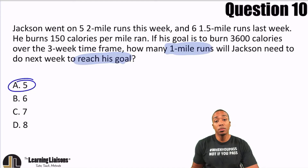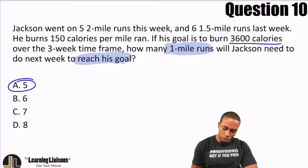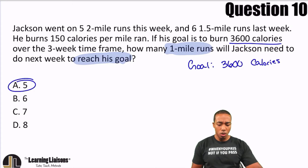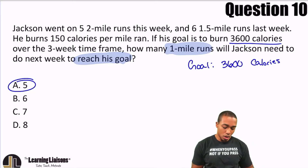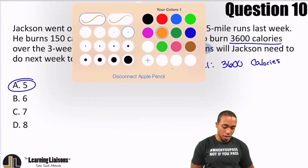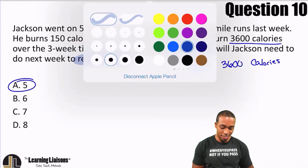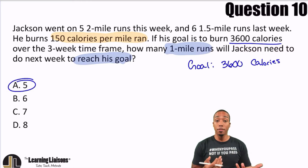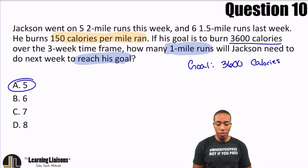We're looking for how many miles. We know that he's trying to burn 3,600 calories — so his goal is 3,600 calories. Now let's figure out how many calories he's burned so far. He burns 150 calories per mile, so we can figure out how many miles he ran so far, multiply by 150 to get the total calories, and then subtract that from the 3,600.